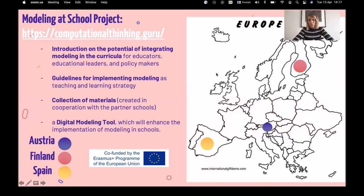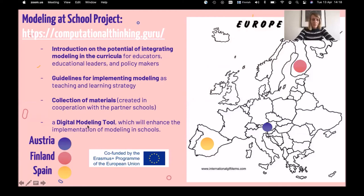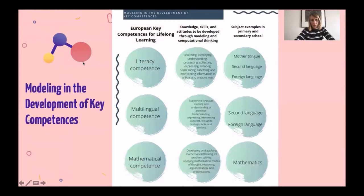There is also a goal to create a digital modeling tool to support this kind of work in schools. You can read more about this project at computationalthinking.guru. You can also find the framework for modeling that we created based on curriculum analysis, focusing on European key competencies for lifelong learning — something all European countries consider in one way or another, which can also be described as transversal competencies or 21st century skills.